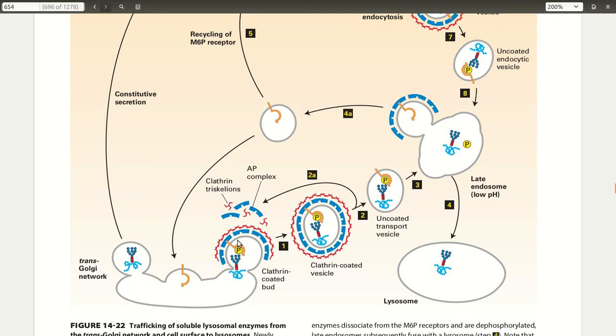When the formation of the clathrin-coated bud forms, these two bind to each other—the lysosomal enzyme and the receptor. Once the pinching off occurs through dynamin, you have this completed three-layered vesicle basically with AP and the clathrin.